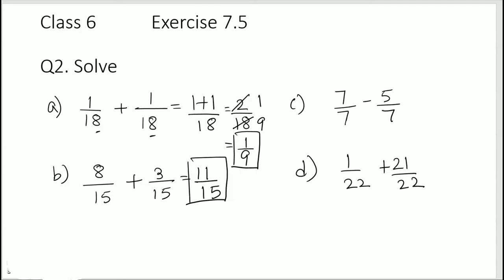C, 7 over 7 minus 5 over 7. Same denominators. So 7 minus 5 is 2, so that's 2 over 7. And it's already in simplest form, so we don't need to do anything.